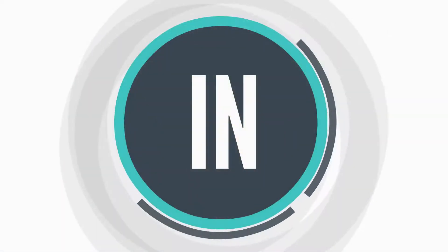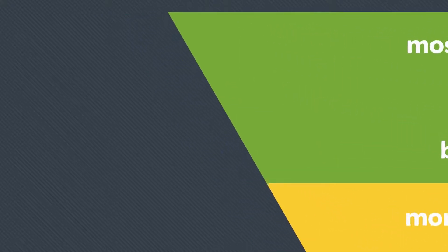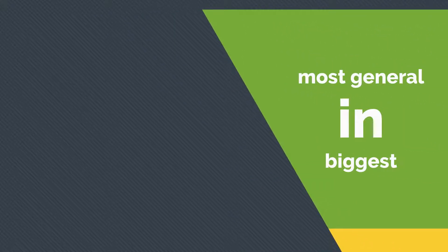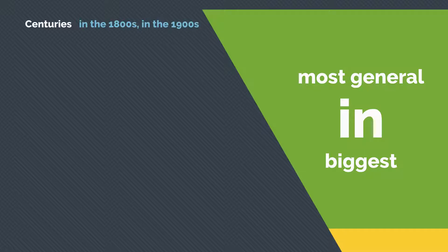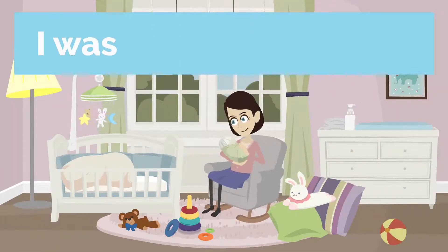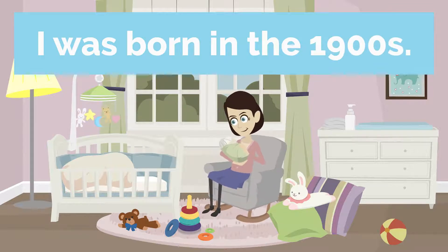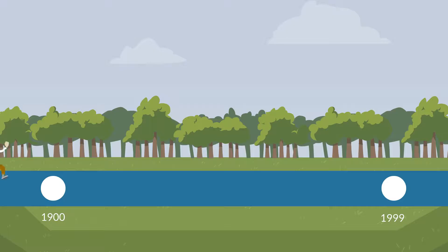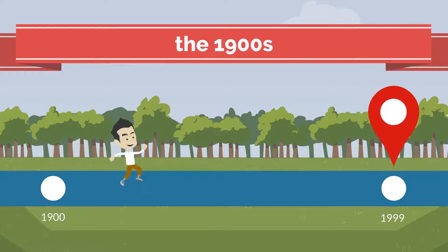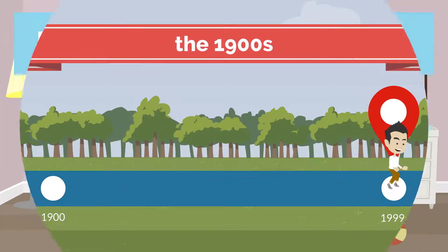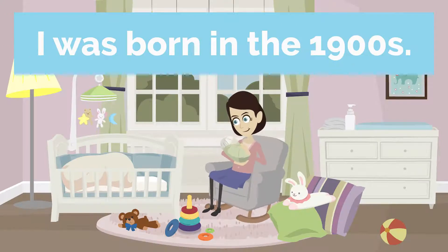Let's start with the preposition in. It can be used with centuries, such as in the 1800s, in the 1900s, etc. For example, I was born in the 1900s. This is not very specific — it means that I was born anywhere between 1900 and 1999. Therefore, we have to use in.